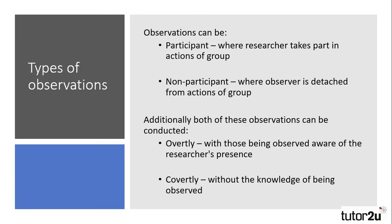There are two main types of observations. Participant, where the researcher is up close with those being studied and taking part in their activities — this gives them an insight into the world view of those people and is higher in validity. The second form is non-participant, where researchers observe behaviour whilst detached from the actions of the group, which makes the research more objective and less open to observer influence.